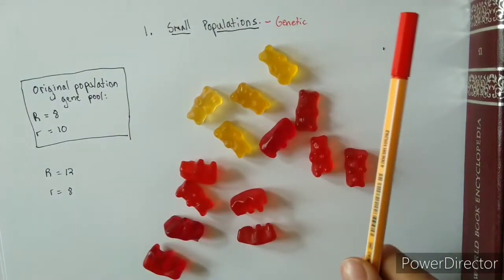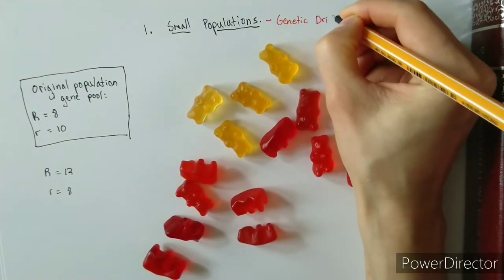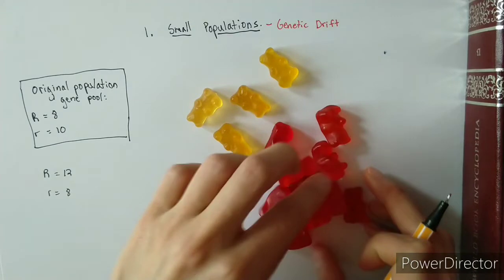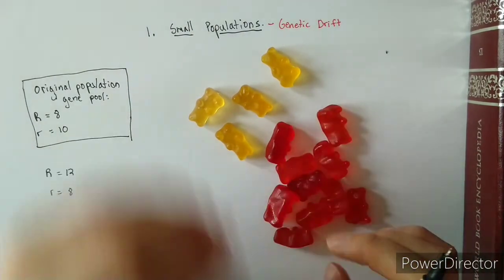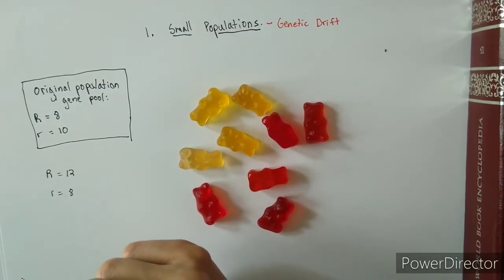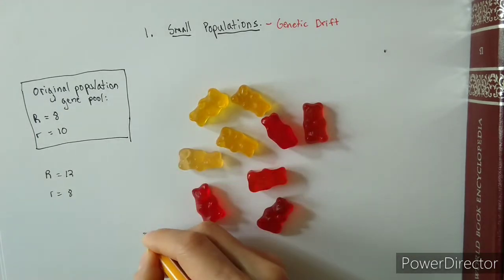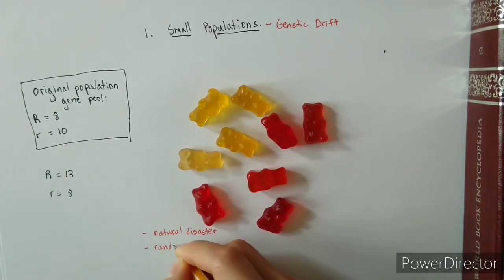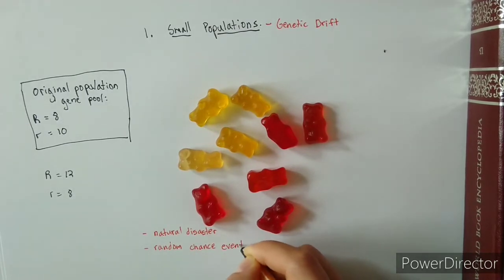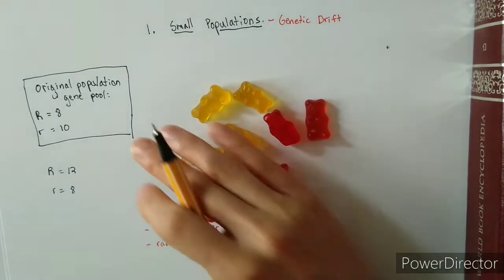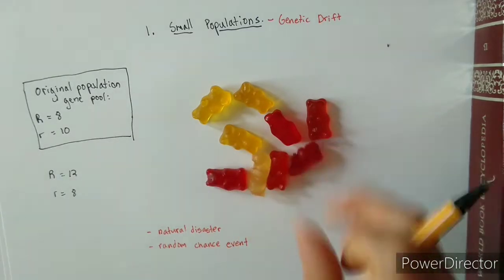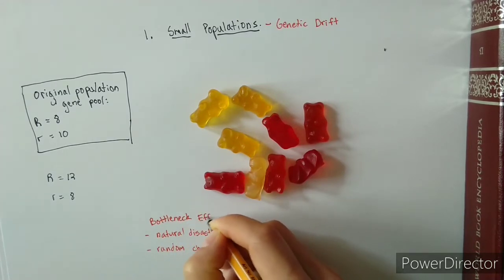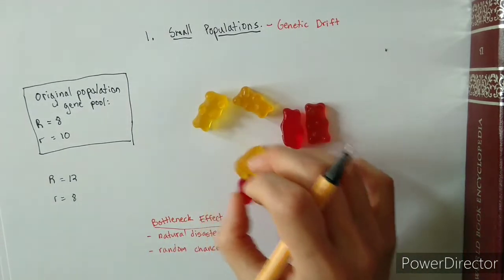When you think of drift, think of a car drifting toward one side — same idea. In genetic drift, all the genes are shifting toward either the dominant or recessive side. In our example, we're definitely shifting toward dominant R versus recessive r. There are two ways this can happen. The first is that a natural disaster, disease, or random chance event wipes out part of your population — it doesn't discriminate, it's perfectly random. That is called the bottleneck effect: your population got poured out of a bottle and a random amount were left to reproduce.